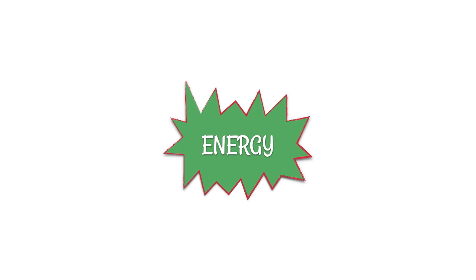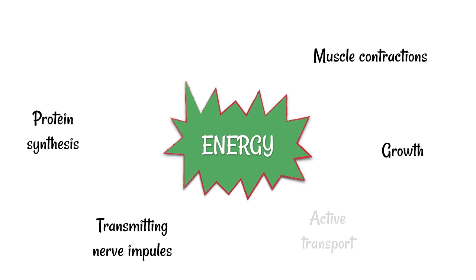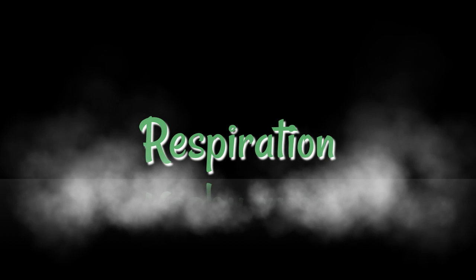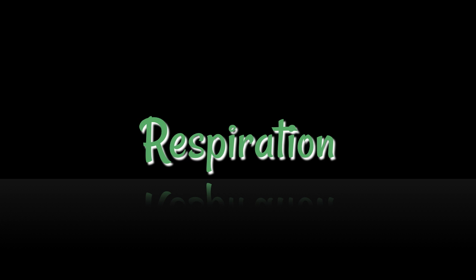Your body requires energy to do all sorts of different things such as muscle contractions, transmitting nerve impulses, growth, protein synthesis, active transport, and maintaining a constant body temperature. All of this is required in the form of a chemical called adenosine triphosphate, also known as ATP. This is provided by a process called respiration, and this happens inside of